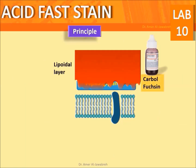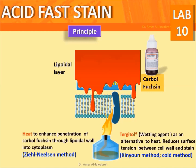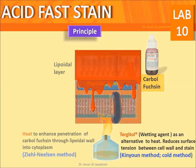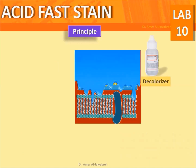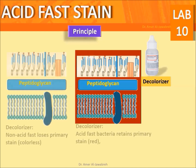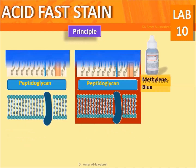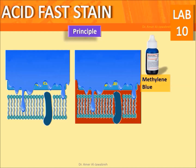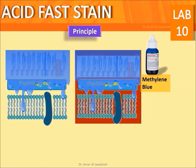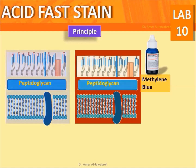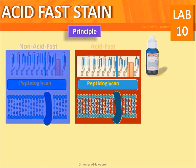Principle: Prime with carbolfuchsin using the Ziehl-Neelsen method with heat, or the Kinyoun method with tergitol. After adding the decolorizer, acid fast cells will remain red while non-acid fast cells become colorless. After counter staining with methylene blue, acid fast cells remain red while non-acid fast cells become blue.